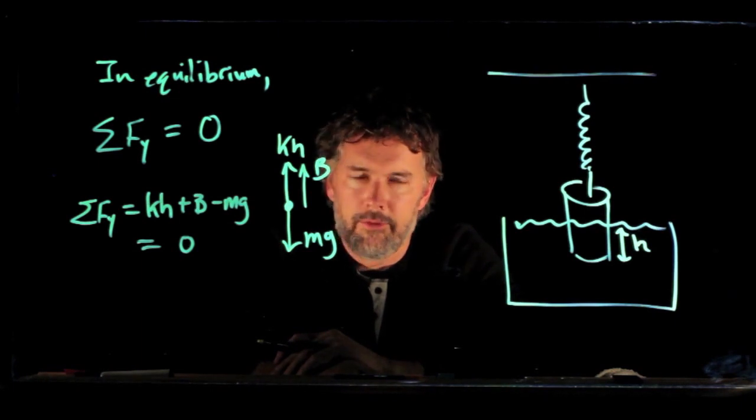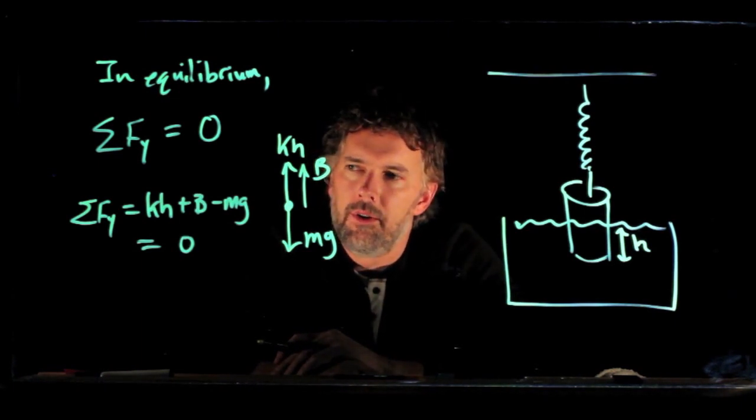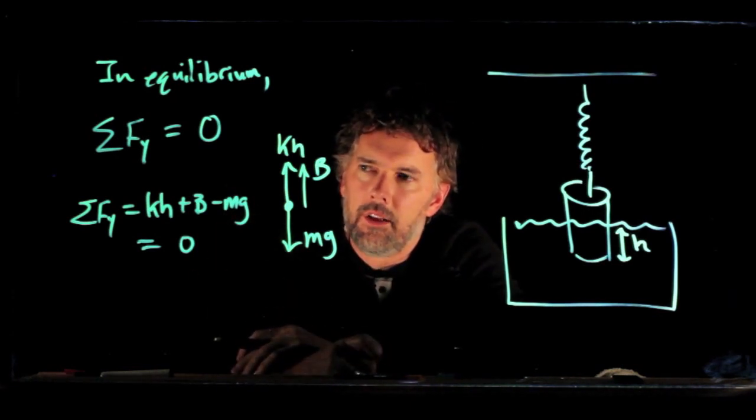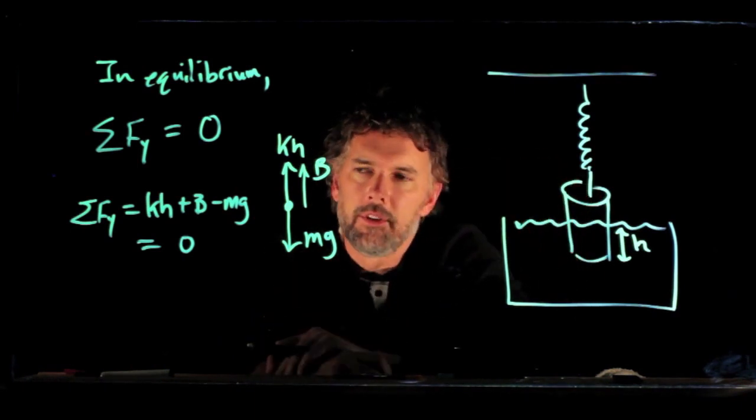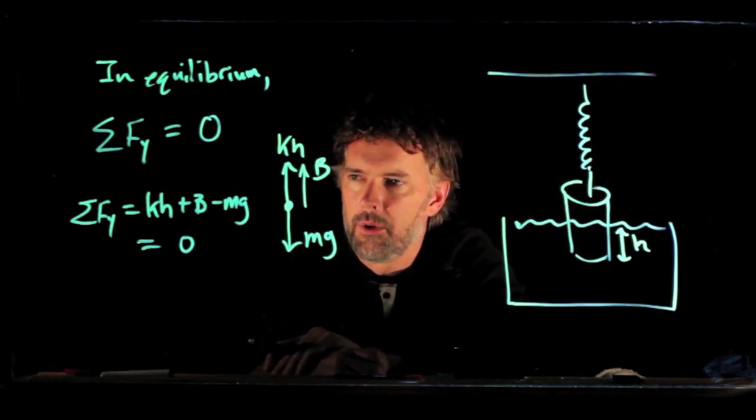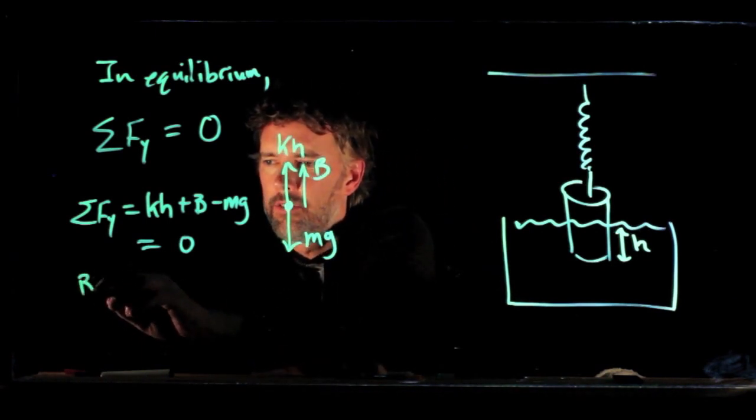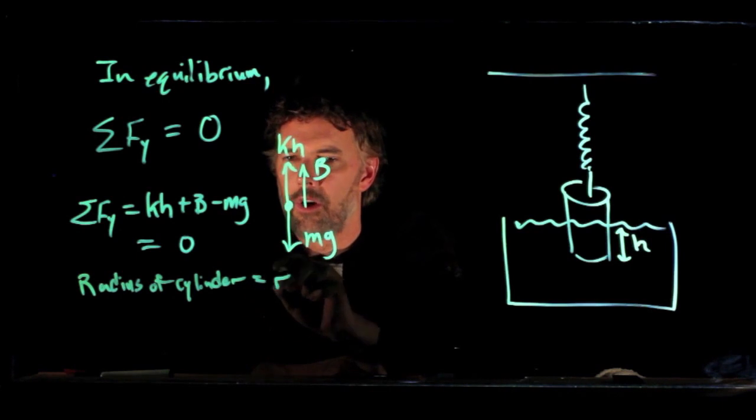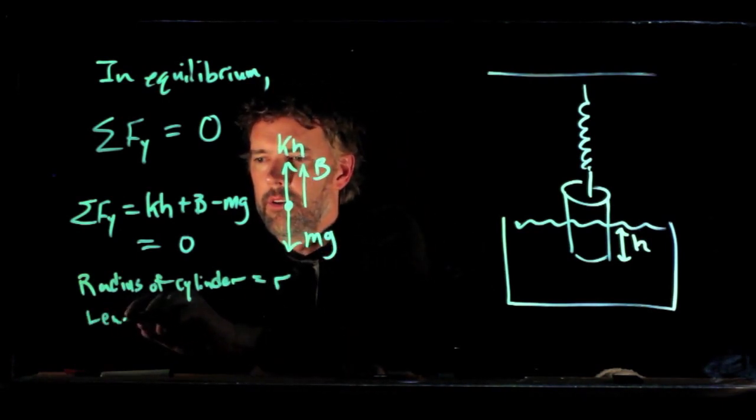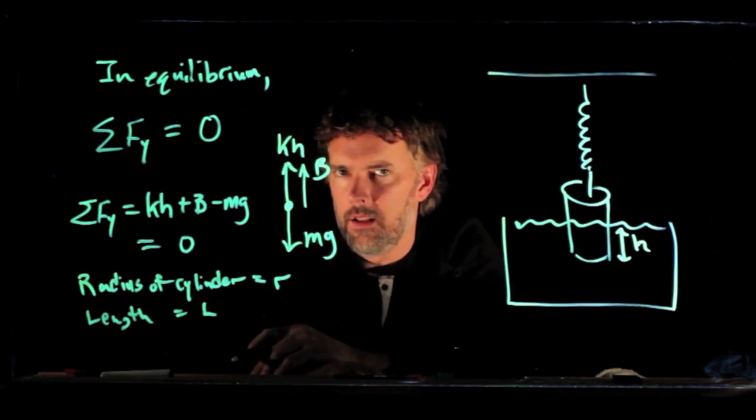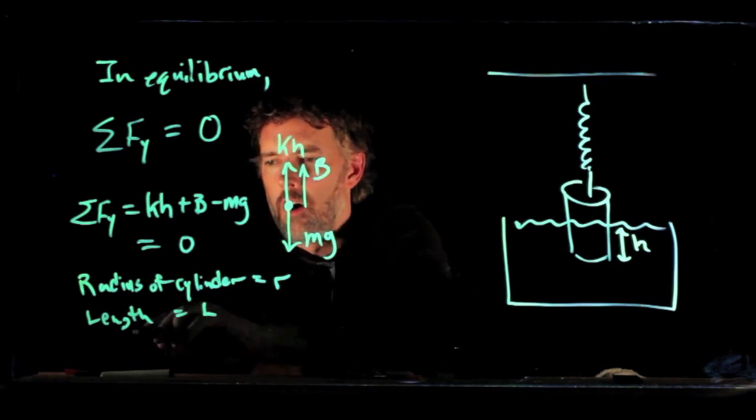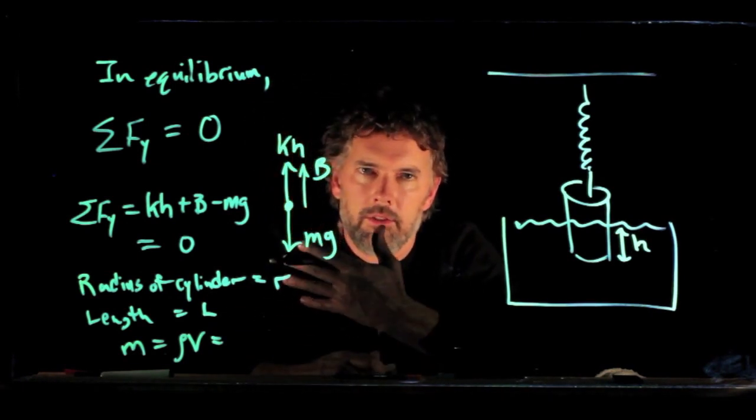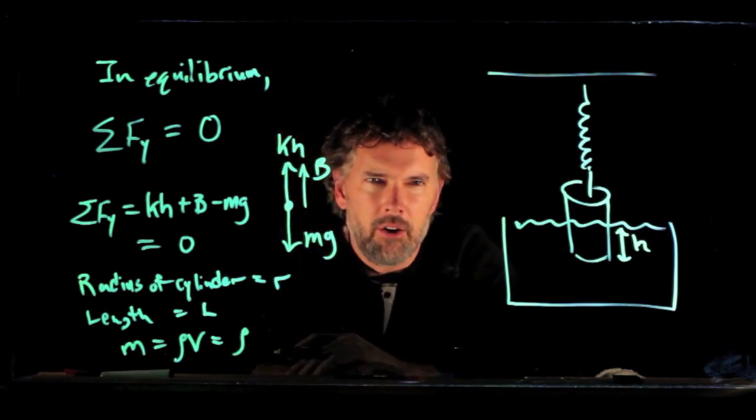Now, we're looking for h. But what we don't know in this equation is what's the buoyant force and what is the mass in terms of the parameters of the cylinder. All right, so let's take the easy one first, right? If they give us the radius of the cylinder as r, and they give us the length of the cylinder as l, then we can calculate the volume, and we know that the mass is just the density times the volume. So the density is whatever it's made of, steel.